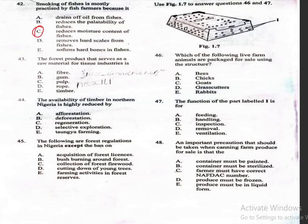Question 43: The forest product that serves as a raw material for tissue industries is A, fibre; B, gum; C, pulp; D, rope; E, timber. The correct answer is option C, pulp.